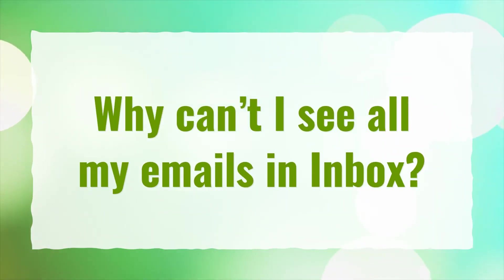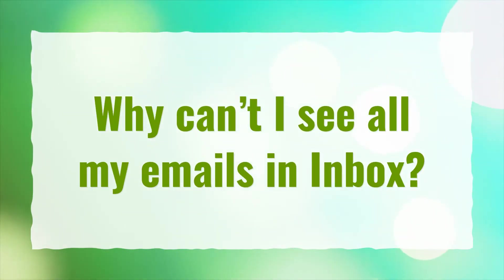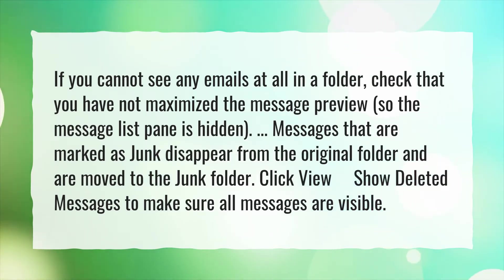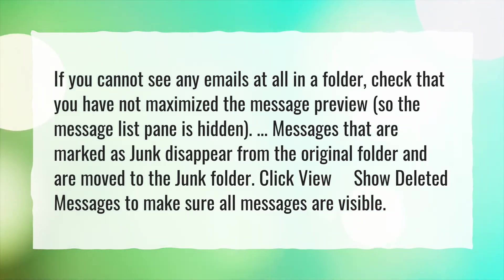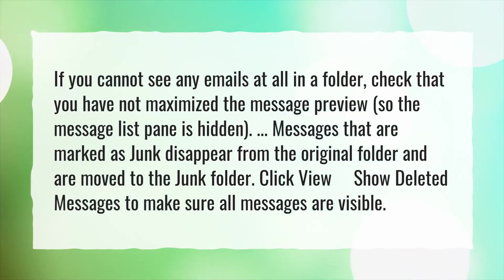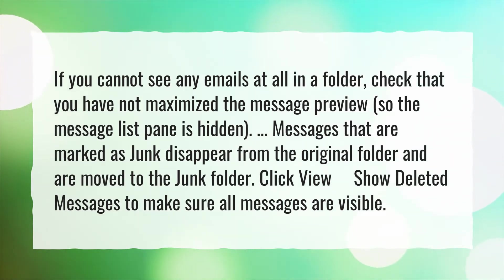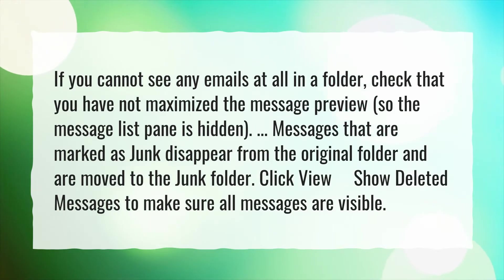Why can't I see all my emails in Inbox? If you cannot see any emails at all in a folder, check that you have not maximized the message preview so the message list pane is hidden. Messages that are marked as junk disappear from the original folder and are moved to the junk folder. Click View, then Show Deleted Messages to make sure all messages are visible.